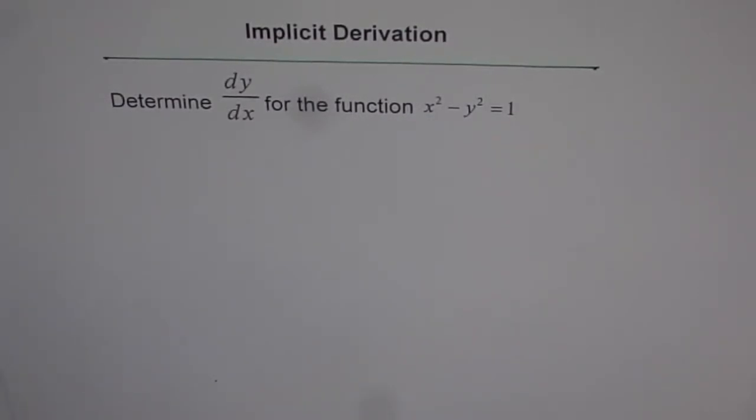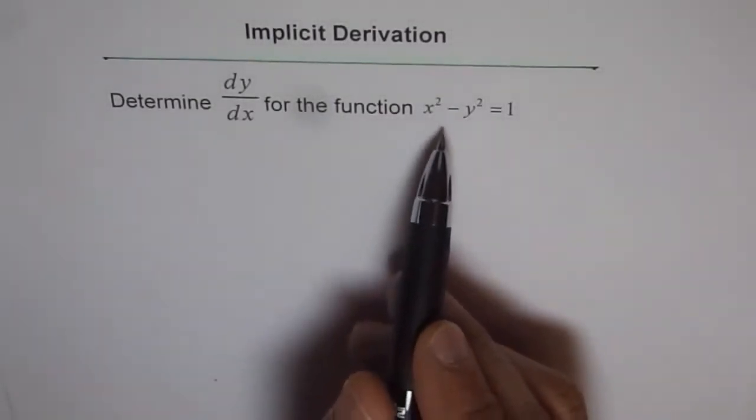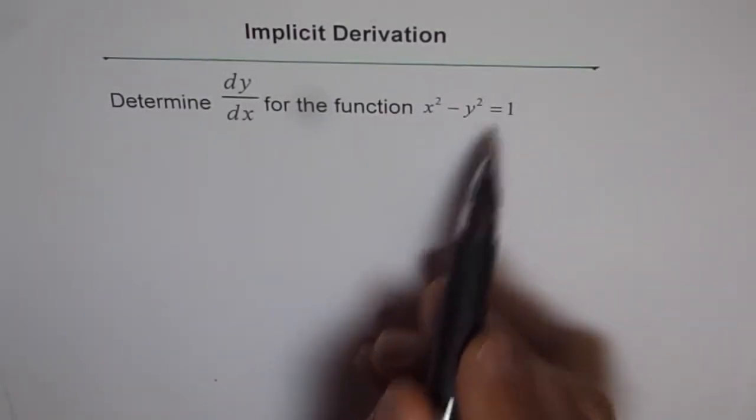Here is a simple example to demonstrate the process to be followed for implicit derivation. The question is, determine dy/dx for the function x² - y² = 1.